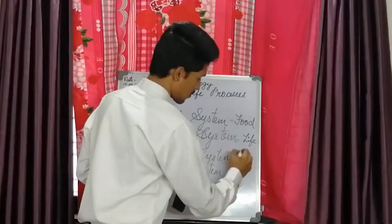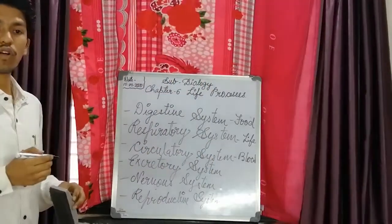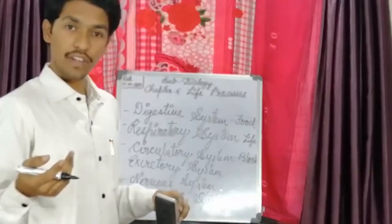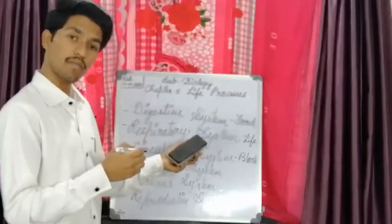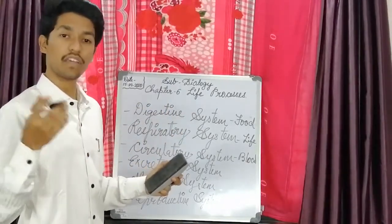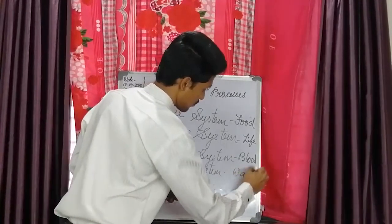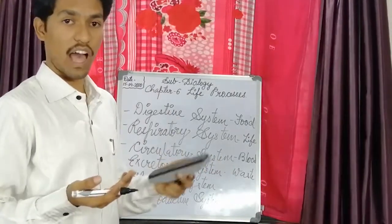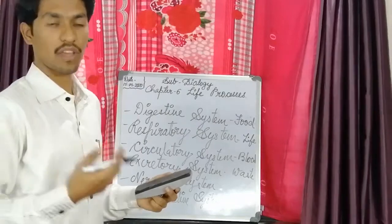Next is the circulatory system — the key word is blood. Here we see the flow of blood through different capillaries, blood vessels, veins, and arteries from the heart to the whole body. Blood is a connective tissue, and it carries oxygen, food materials, and minerals throughout the body. Next is the excretory system. Excretion means removal of waste. After we eat and consume something, the energy is utilized by our body, and the remaining metabolic waste present in our body is eliminated.